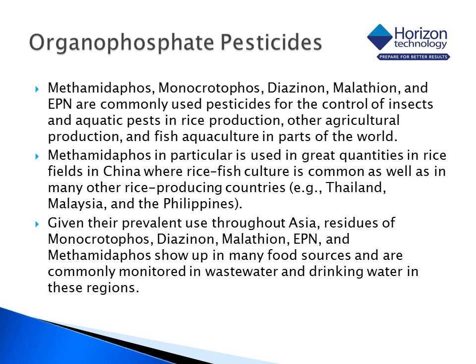Methamidaphos in particular is used in great quantities in rice fields in China where rice-fish culture is very common, and in many other rice producing countries such as Thailand, Malaysia, and the Philippines. Given their prevalent use throughout Asia, residues of these organophosphate pesticides show up in many food sources and are commonly monitored in wastewater and drinking water in these regions.